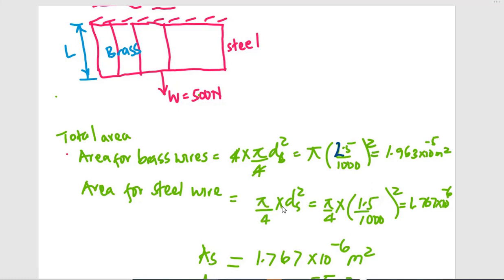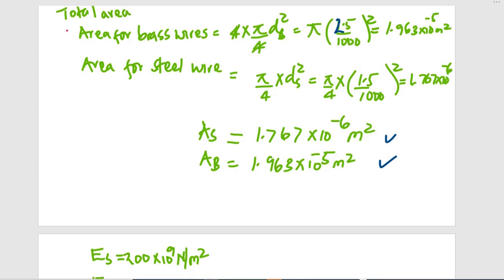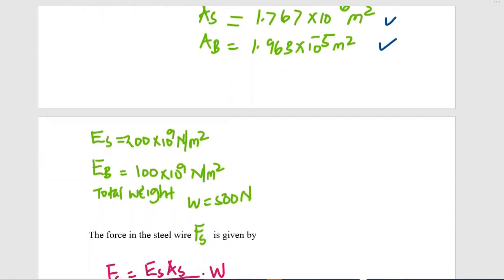The area for the steel wire is pi over 4 times the square of the diameter. With a diameter of 1.5 mm converted to meters, this gives 1.767 × 10⁻⁶ square meters. So, AS (area of steel) = 1.767 × 10⁻⁶ m², and AB (area of brass) = 1.963 × 10⁻⁵ m².